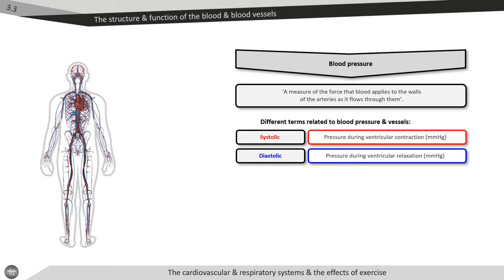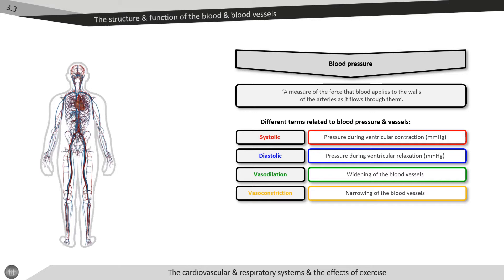There are two further terms which we need to know in regards to blood pressure and the vascular structure, and that is vasodilation and vasoconstriction. All blood vessels are able to widen, which is known as vasodilation, or narrow, known as vasoconstriction. This is because of the smooth muscle found within the vascular walls. It's this change in vascular tone which enables the body to direct the flow of blood to different tissues and also plays a part in the regulation of blood pressure.